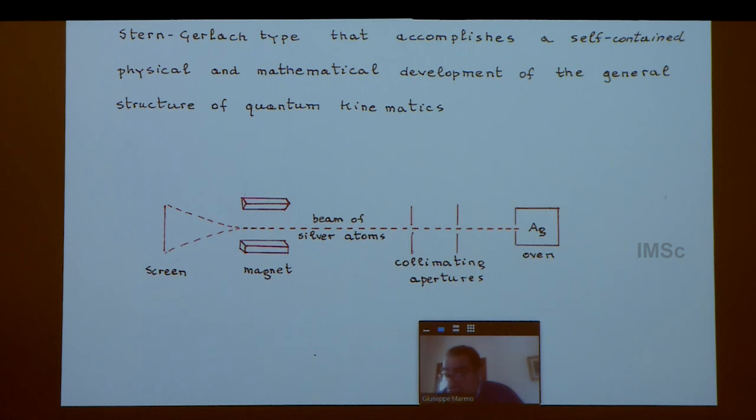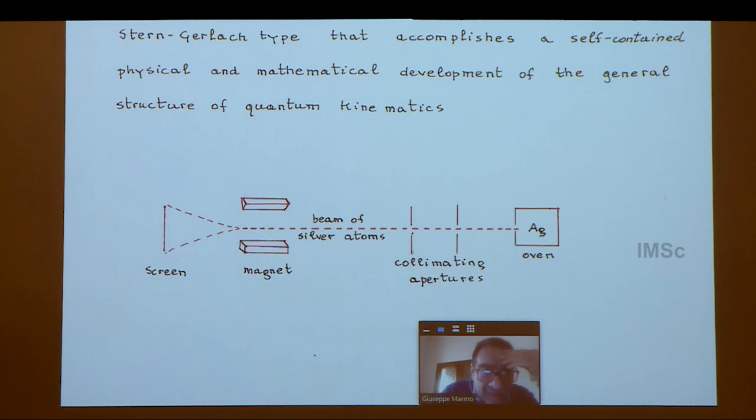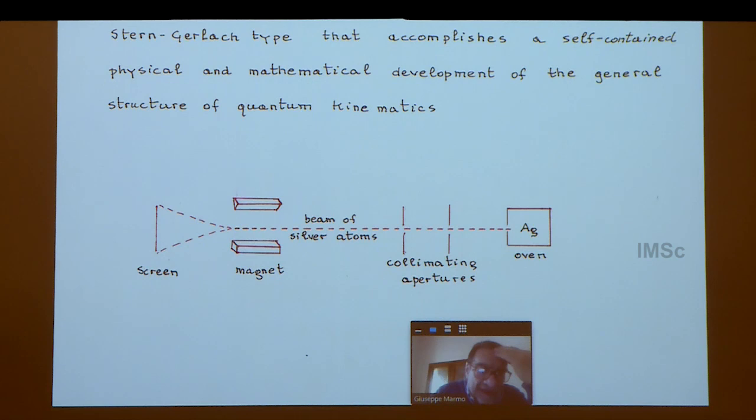The idea of Schwinger was that all the conceptual setting of quantum mechanics from the algebraic point of view can be completely understood with the standard Stern-Gerlach type of experiment. What you read here is exactly what he wrote—that this standard Stern-Gerlach experiment accomplishes a self-contained physical and mathematical development of the general structure of quantum kinematics.